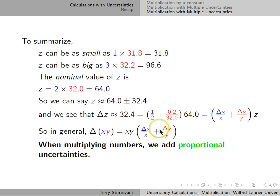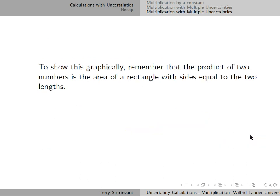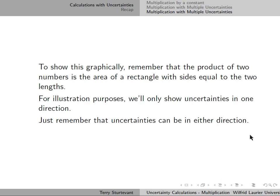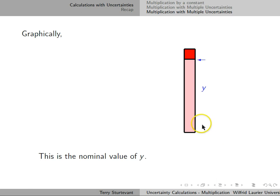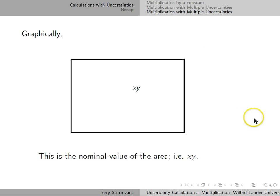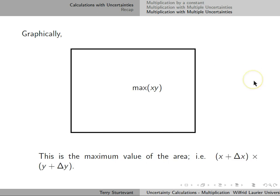In general, the uncertainty in xy is xy times (delta x over x plus delta y over y). When we multiply numbers, we add the proportional uncertainties, since delta x over x is the proportional uncertainty in x and delta y over y is the proportional uncertainty in y. This can be shown graphically by remembering that the product of two numbers is the area of a rectangle with sides of those two lengths. Here we have a bar of length x with uncertainty delta x, and y perpendicular to it with uncertainty delta y. The nominal value of the product is the area x times y, and the maximum value is x plus delta x times y plus delta y.